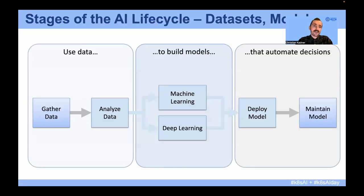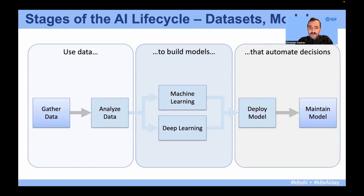What are the stages of the AI lifecycle? It's mostly about models, data models and data sets. In a nutshell, we use data to build models in order to automate decisions. Each of those big steps has smaller steps — data we have to gather, we have to analyze it. The models have to be trained — there can be traditional machine learning models, deep learning models. And once they're trained, we want to deploy them, and we have to maintain them.